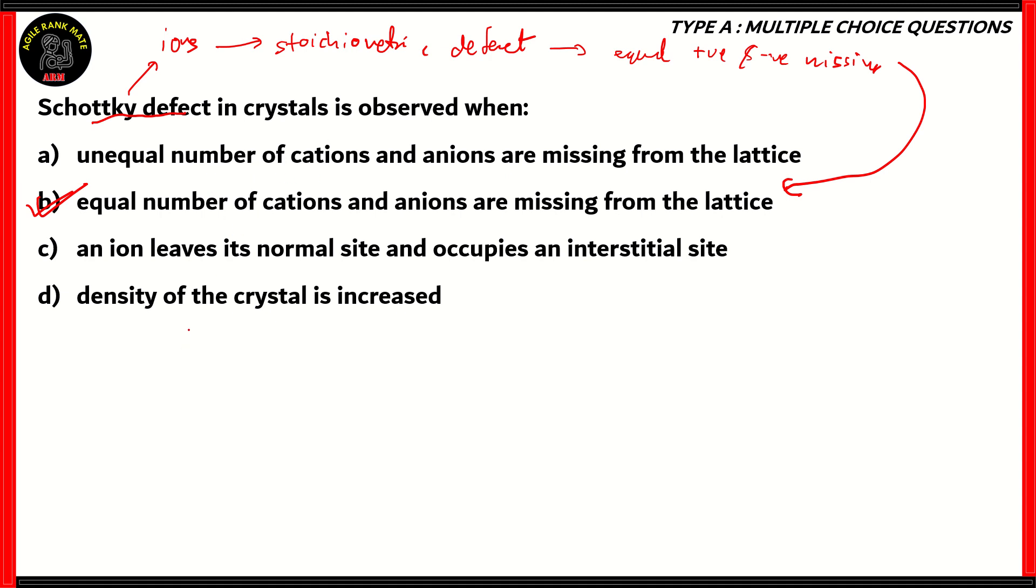Now let's look at the other options. Option D says density of the crystal is increased. When does density increase? Density is increased when the atom is displaced to an interstitial site. Therefore, option D is actually the description for an interstitial defect.